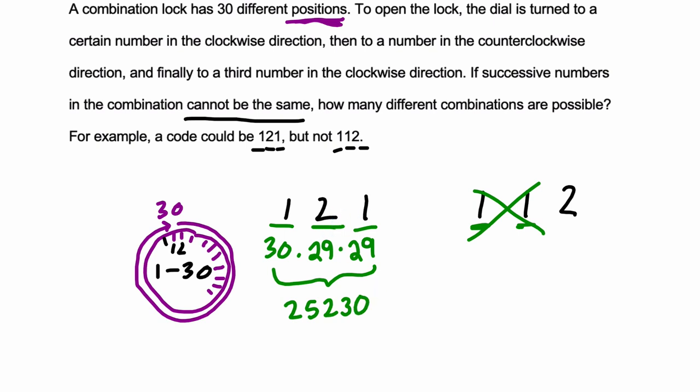I often make the mistake when I solve this problem of writing 30 times 29 times 30 again here, but just because you can repeat that 1 from the beginning, right, that number comes back, you still lose the 2 before it. So although you can pick the 1 again in this third spot, you can't pick that 2 so there's still only 29 possibilities, be careful.